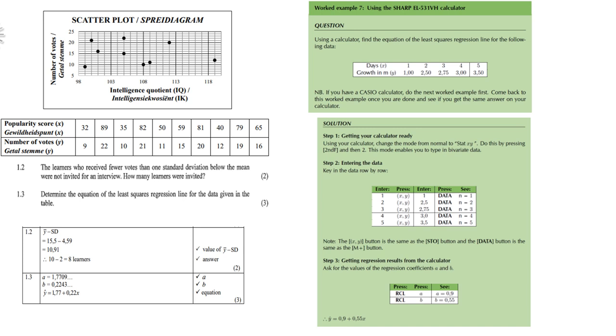Question 1.2. The learners who received fewer votes than one standard deviation below the mean were not invited for an interview. How many learners were invited? So what you do is you take the mean and you subtract the standard deviation. So in the previous question the mean was 15.5 and now we subtract the standard deviation which is 4.59. And that gives you the answer of 10.91. Then how many learners? Well 10 minus 2 gives you 8 learners.